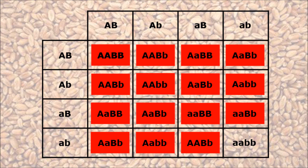Only when no dominant alleles are present in neither of the genes is the phenotype recessive, which means that only 1 in 16 is white, giving us a ratio of 15 to 1.